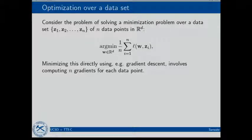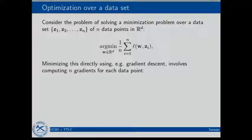If I wanted to minimize this directly, I would do gradient descent. I'd have to compute n gradients, one for each loss function, which is like taking one full scan over the data — which is not possible in a lot of cases.